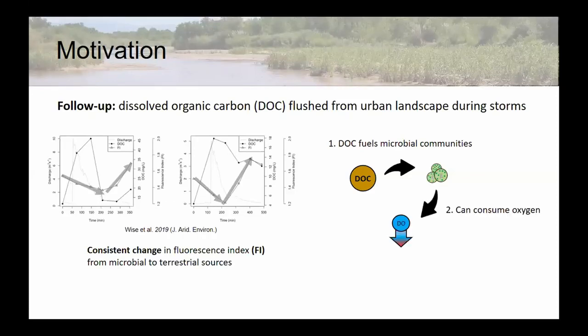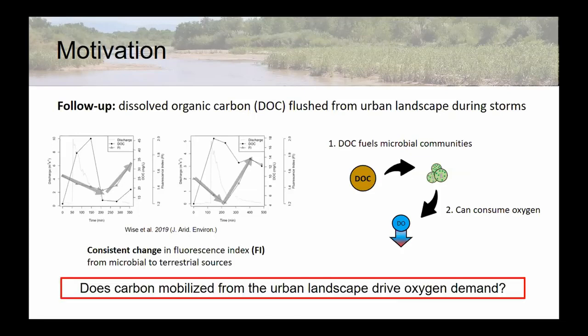DOM or DOC fuels microbial activity, and the quality of the DOC actually controls or limits that. We know microbial activity — especially heterotrophic activity — can consume oxygen. So one of our questions was: does this carbon being mobilized off of the urban landscape affect or drive oxygen demand?